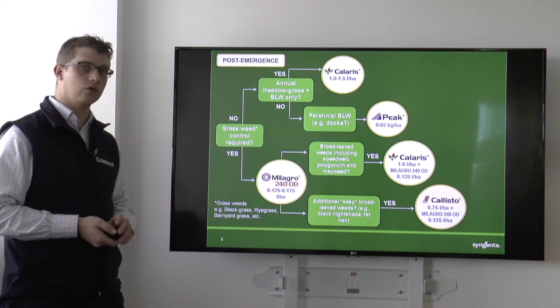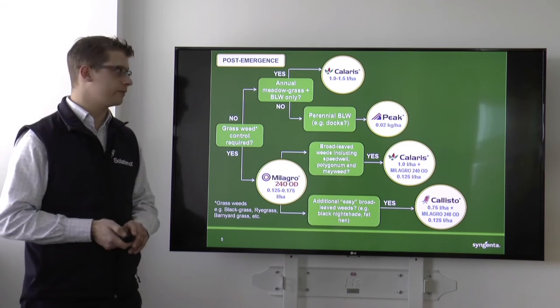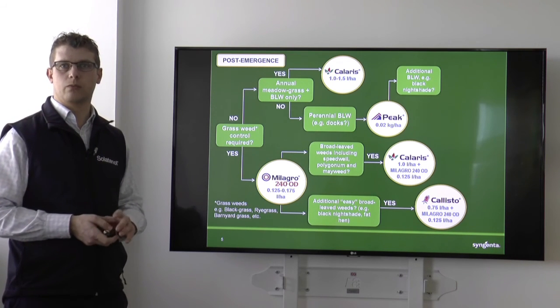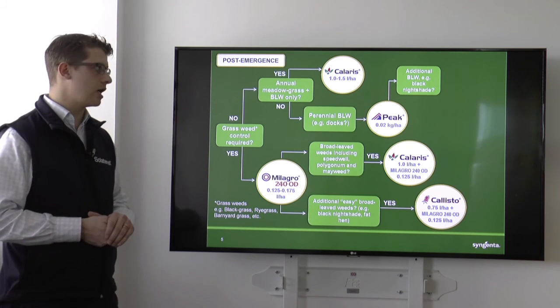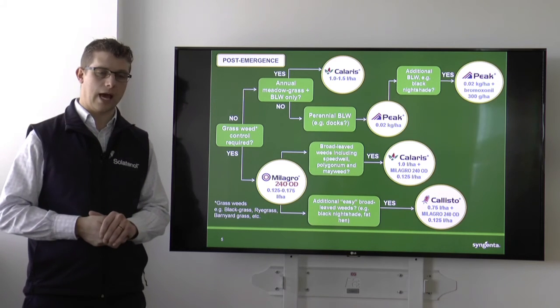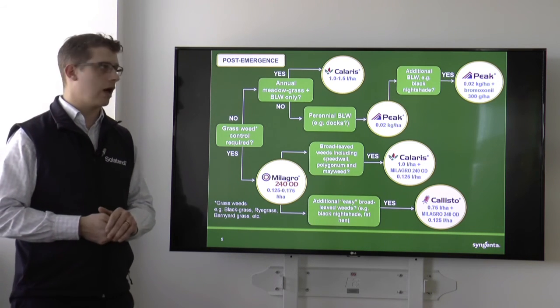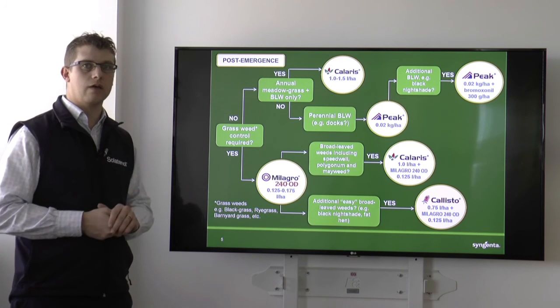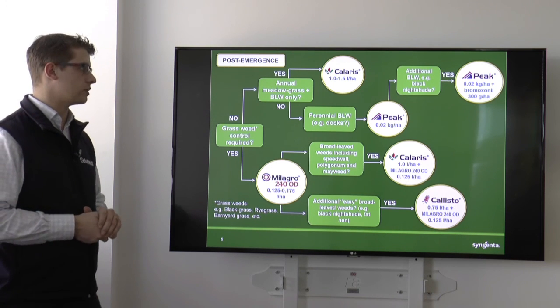If we wanted to add some more additional broadleaf weed control and take out things like black nightshade, then we could add in 300 grams a hectare of Bromoxynil to our 0.02 kilos a hectare of Peak, and that is going to effectively make Jester, which we used to sell a few years ago.